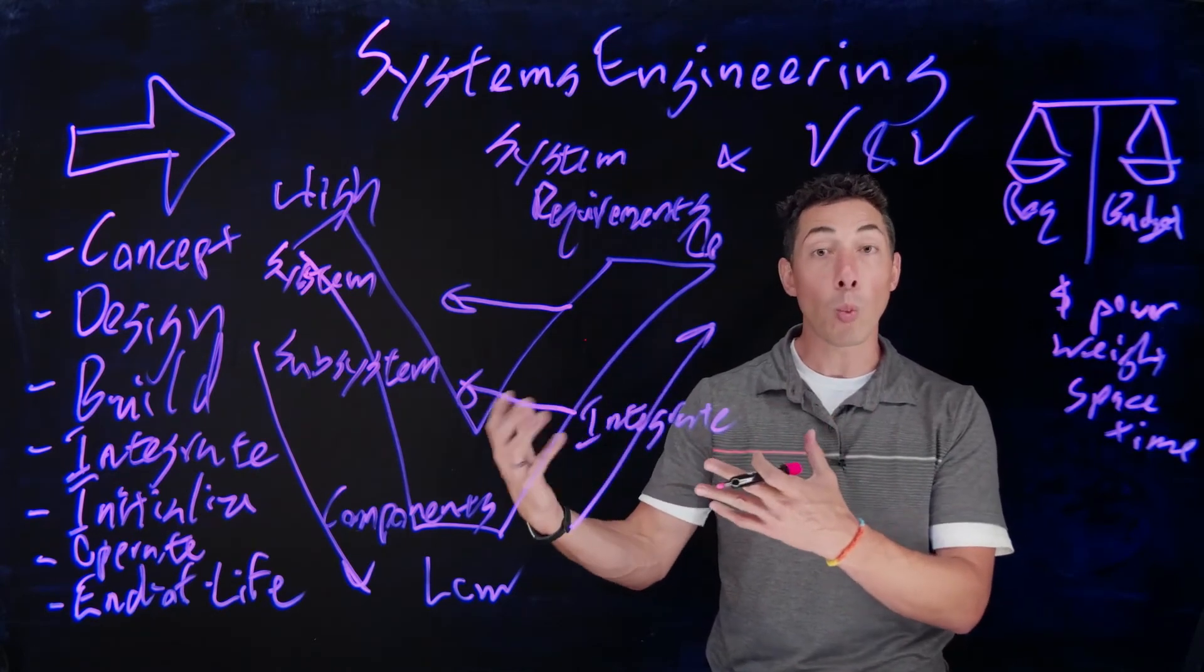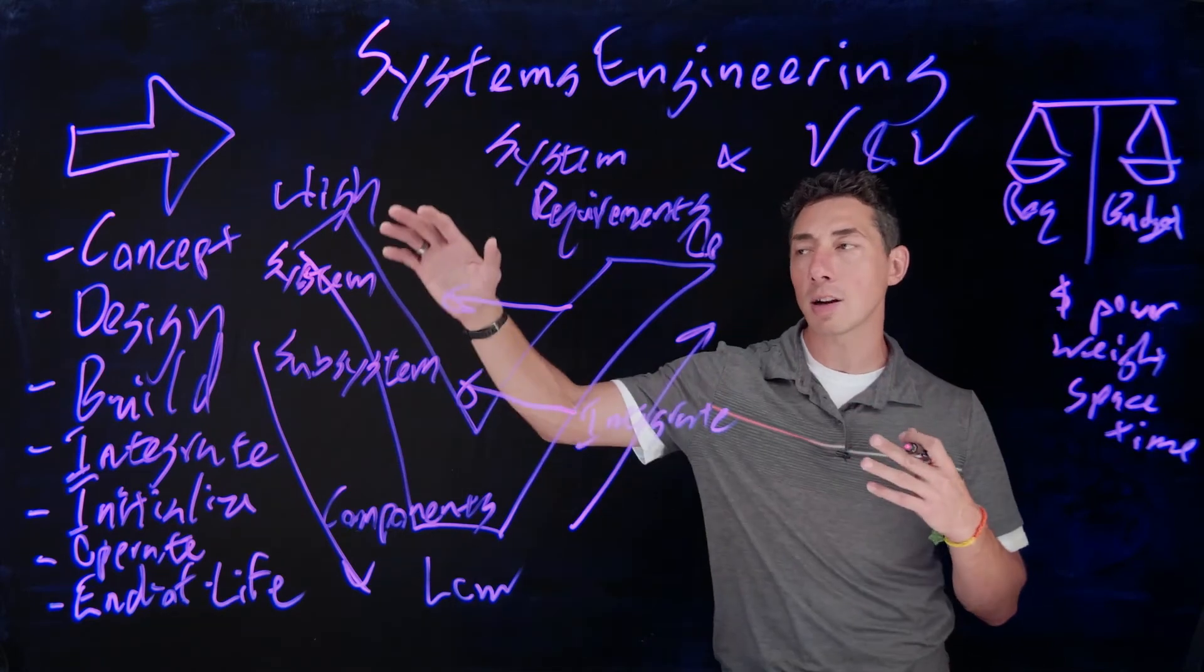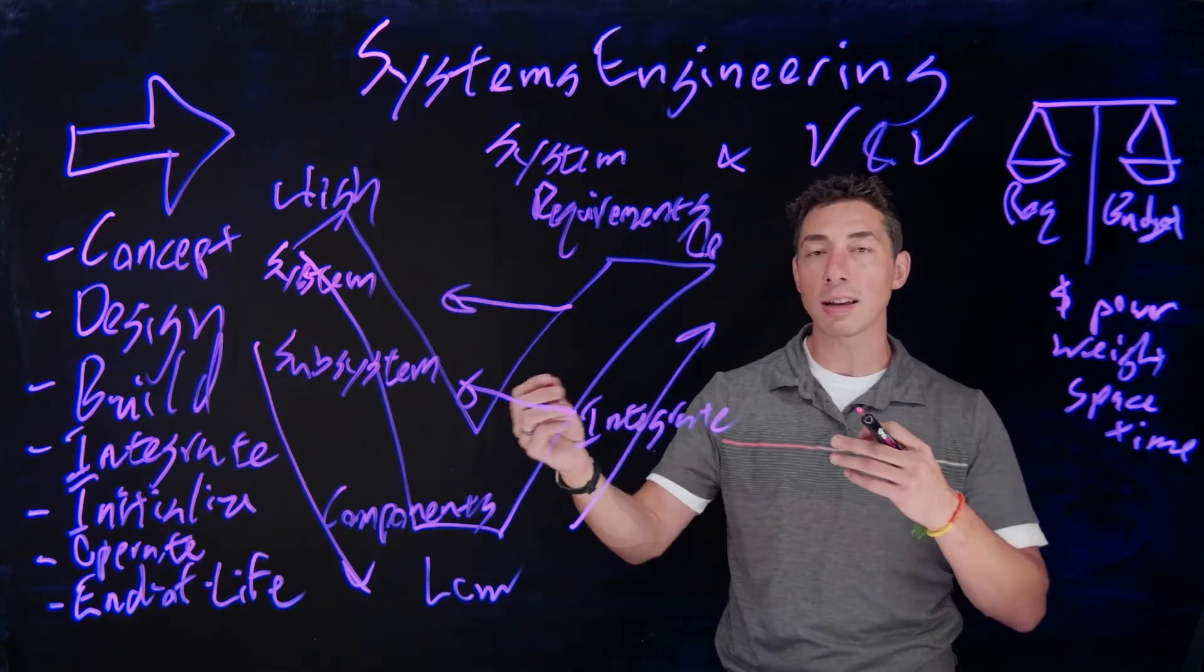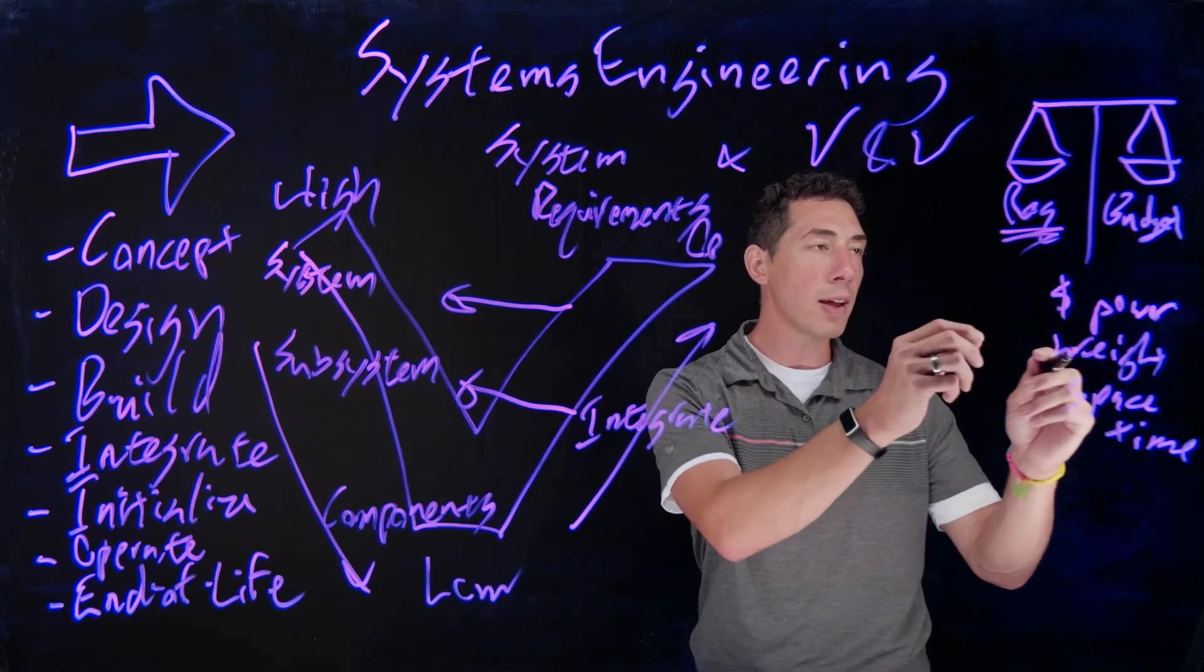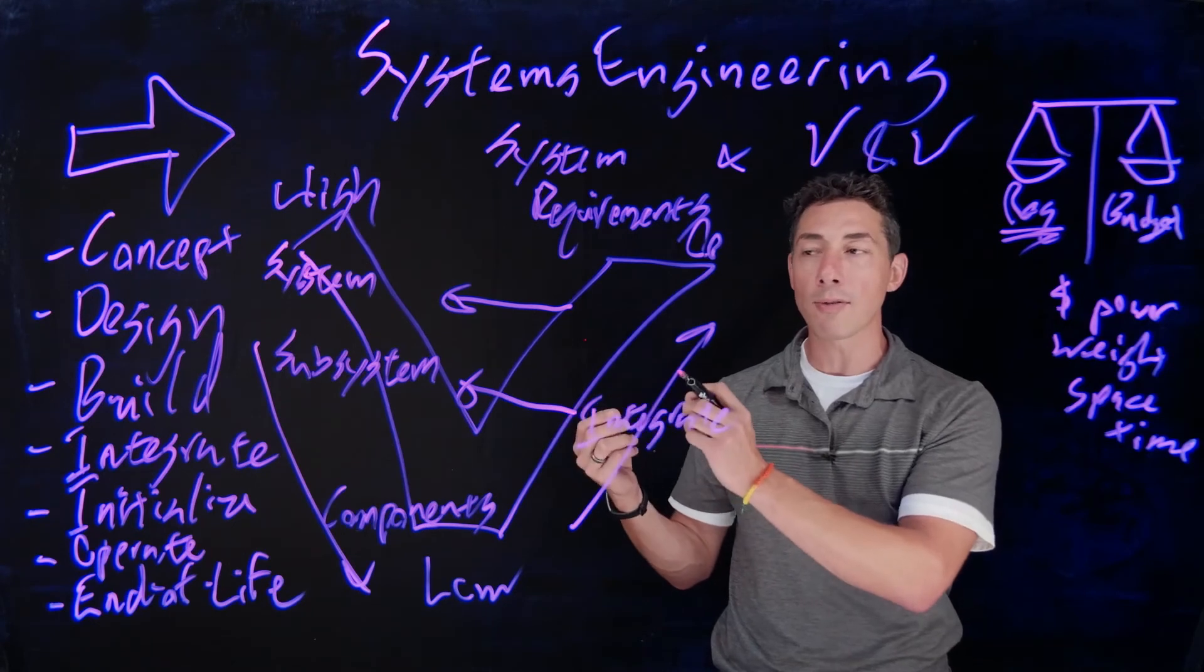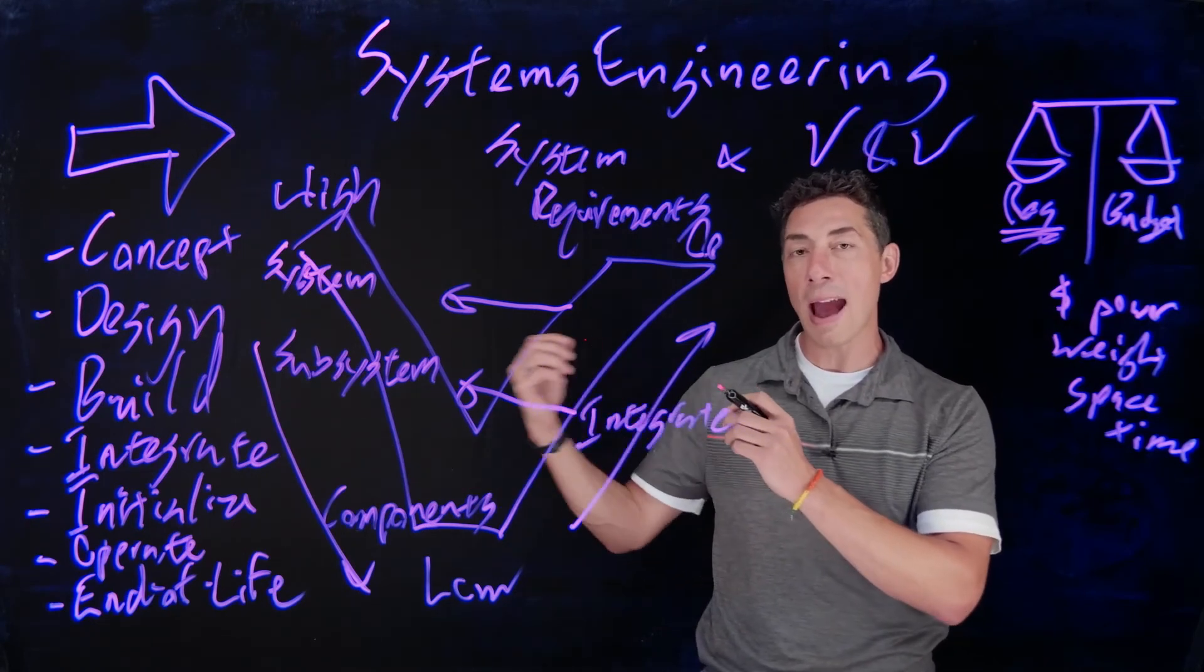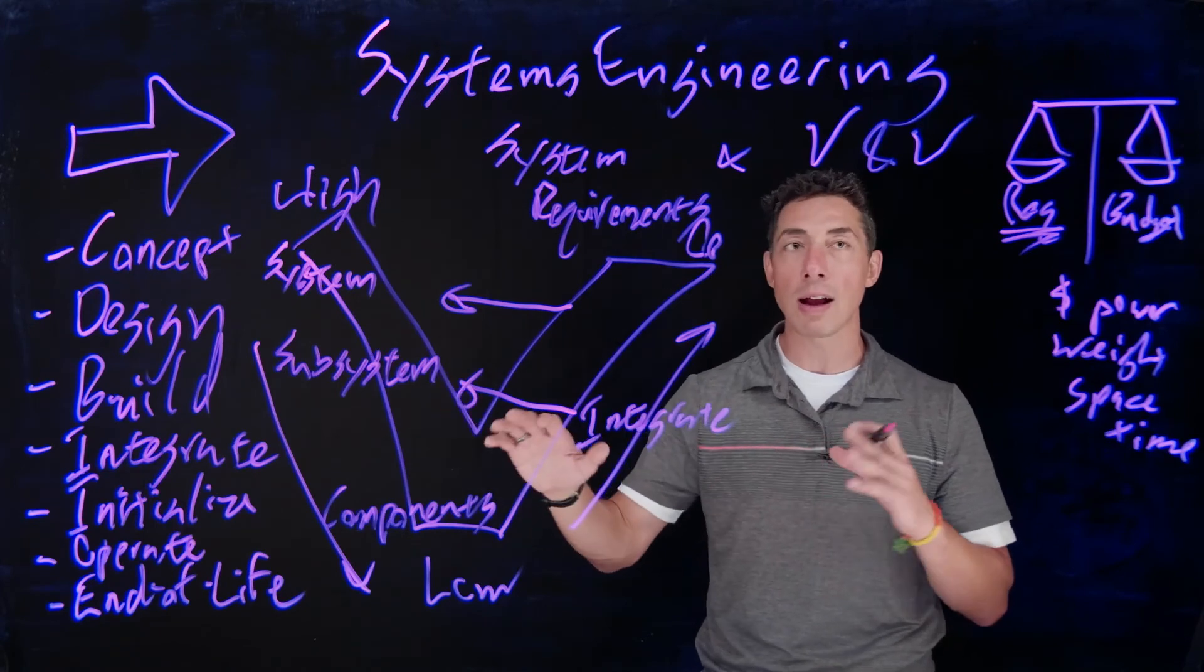And each one of these requirements, if you can't quite meet the weight requirement in one place, a good system engineer is going to be a generalist, and they're going to understand how all these pieces work together so they can say, well, in order to meet this requirement, what can I borrow from some of the other subsystems? Maybe I can take a little bit of weight off of this, or maybe I can add a little bit more power over here if I change this into a trade study and move things around.